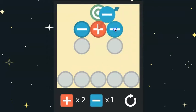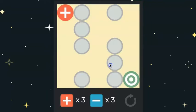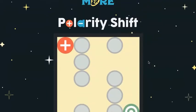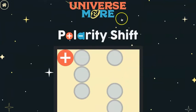And by the time you're at level 19, 20, it does get quite challenging. So the game is called Polarity Shift. I hope you have a chance to give it a try. It's by Universe and More, and thanks for watching.